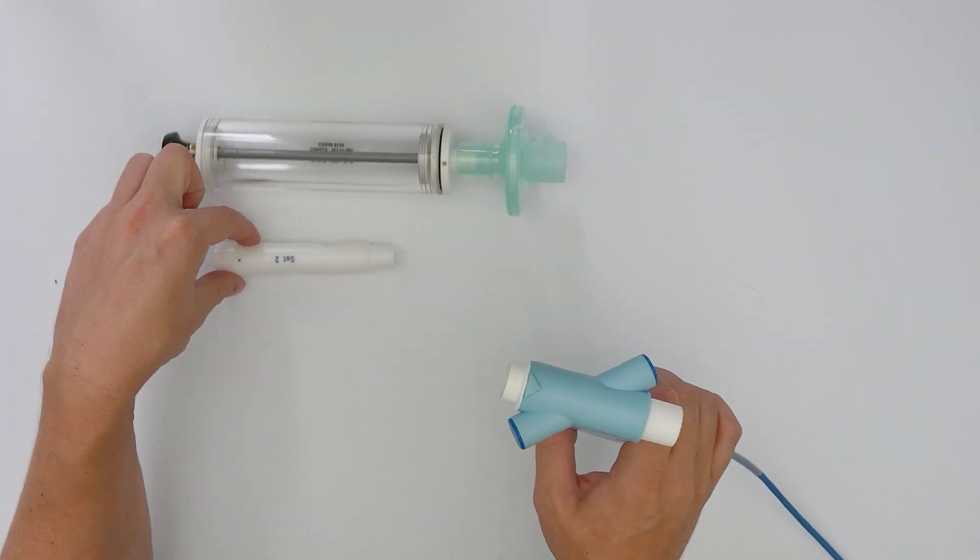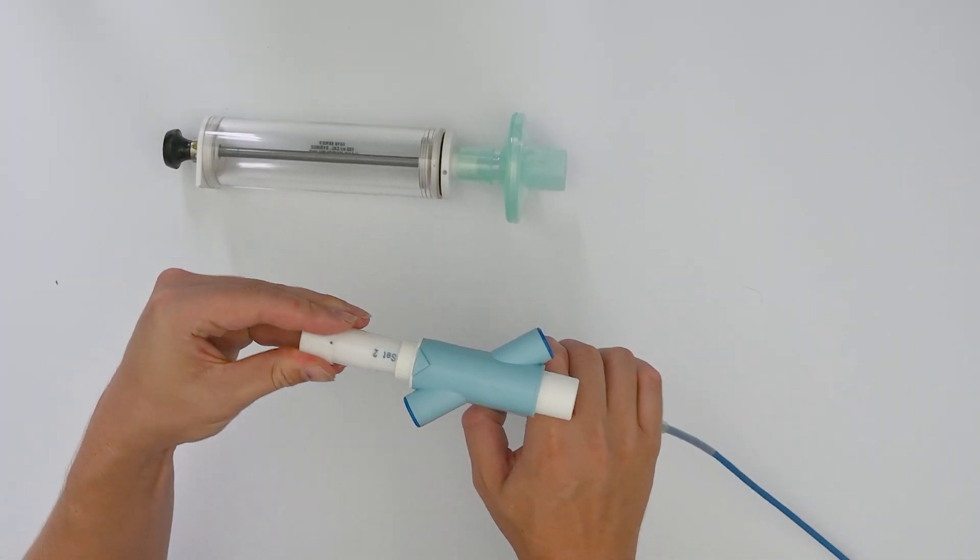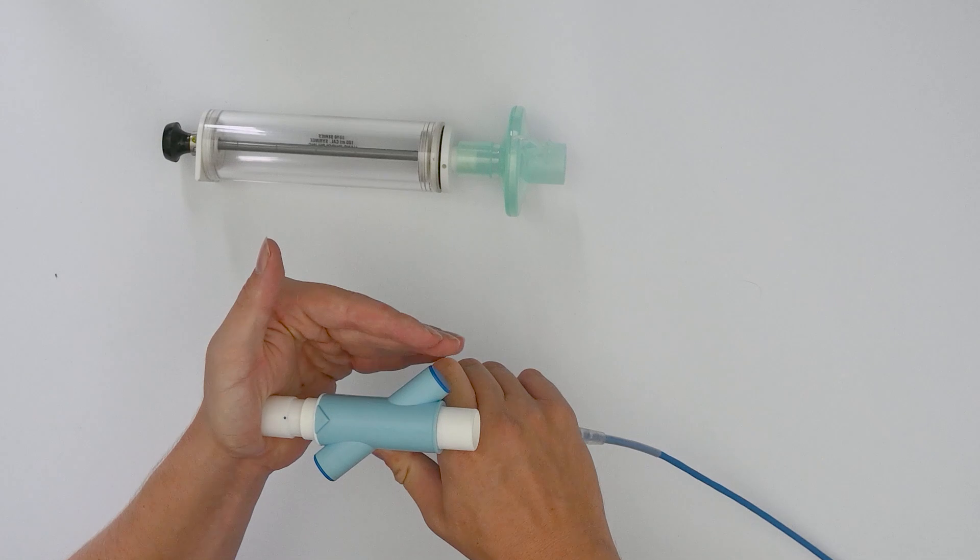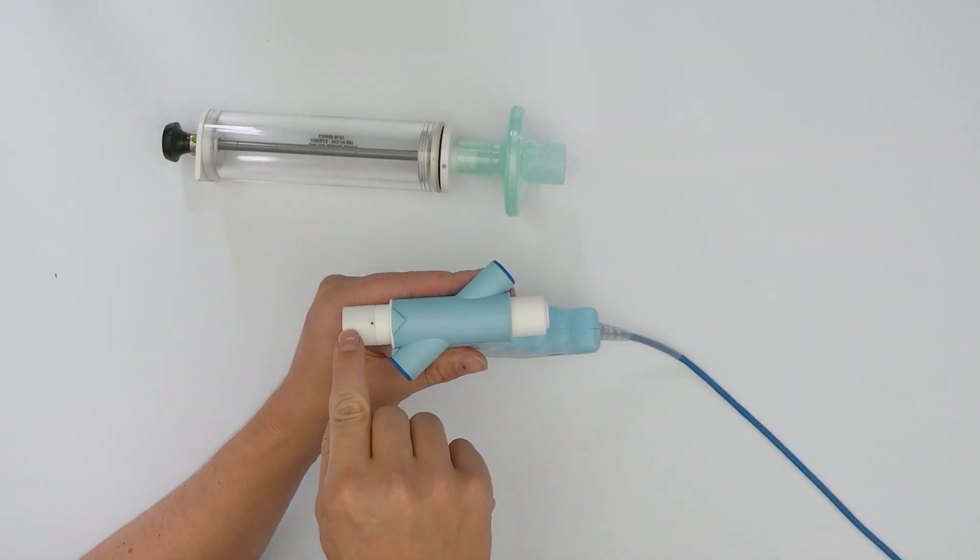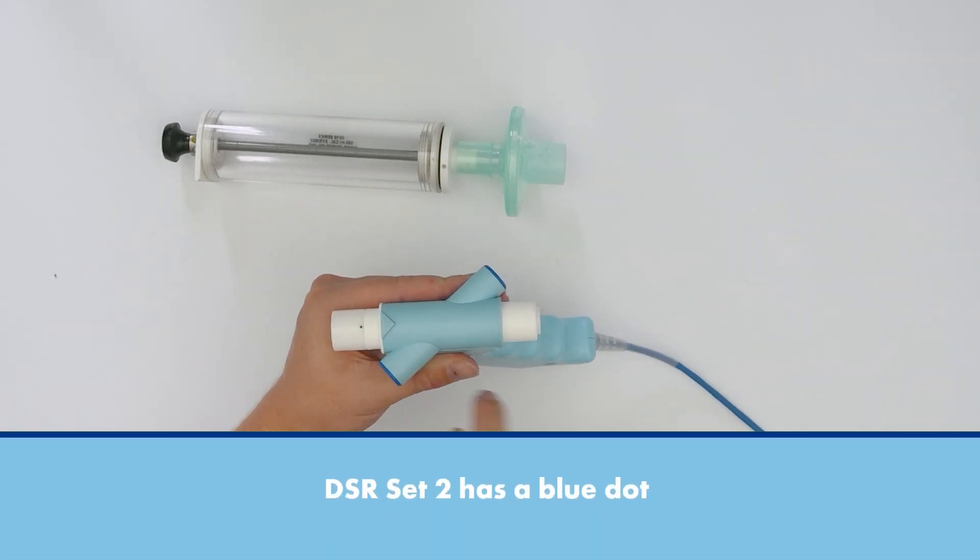Then, insert the dead space reducer, which you will need for your measurements. Be sure to line up the dot on top of the dead space reducer with the triangle of the spirette and flow head.